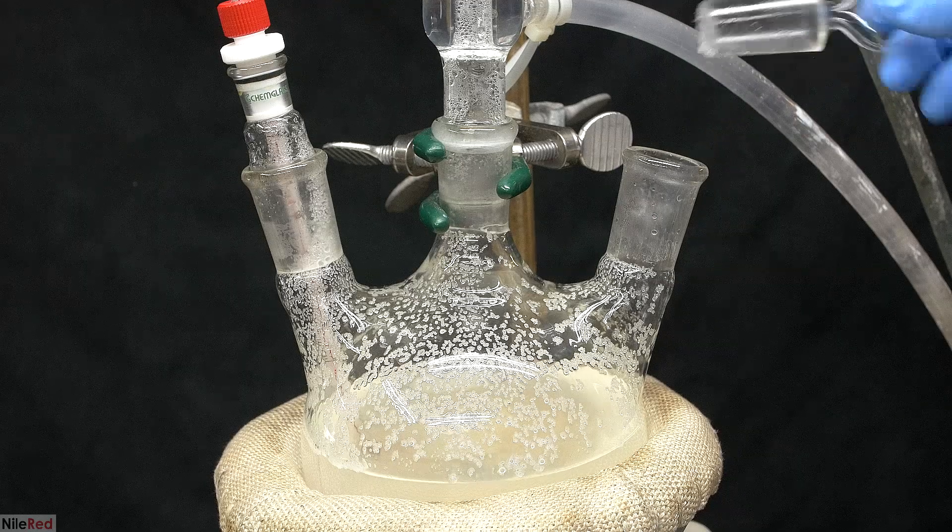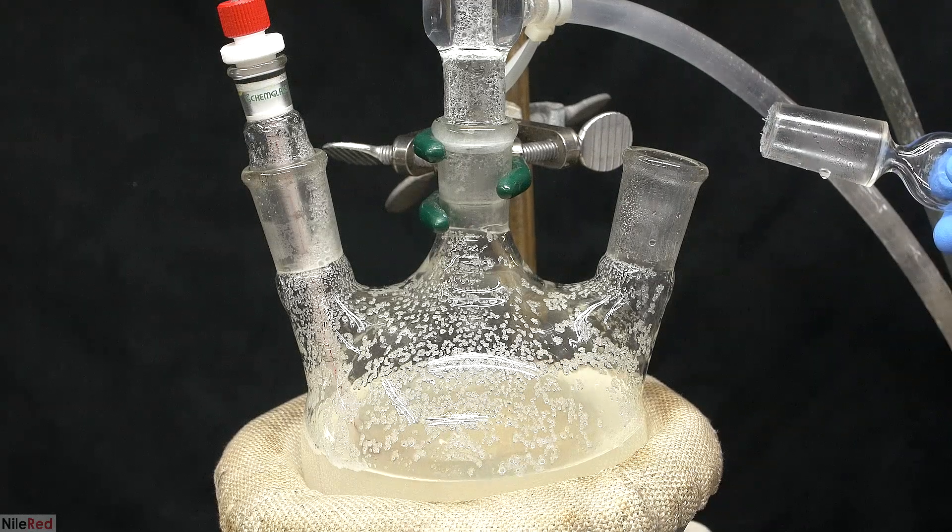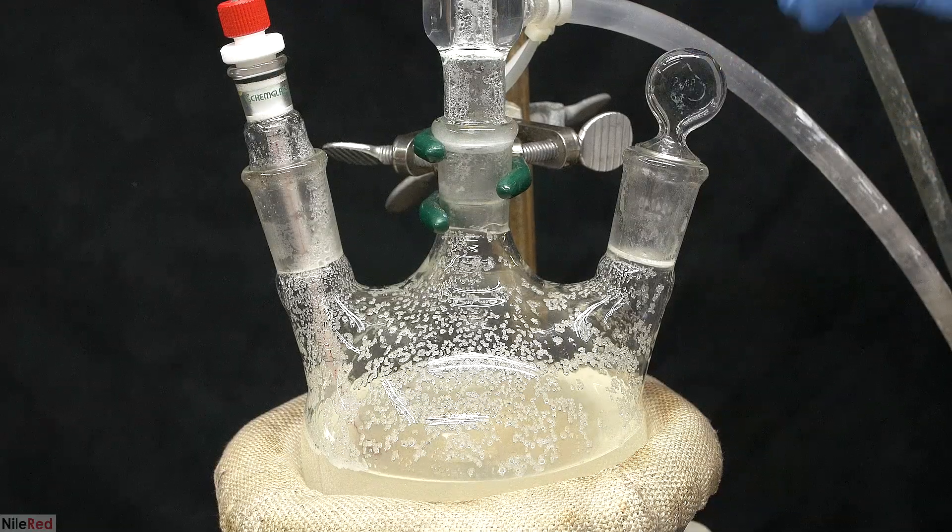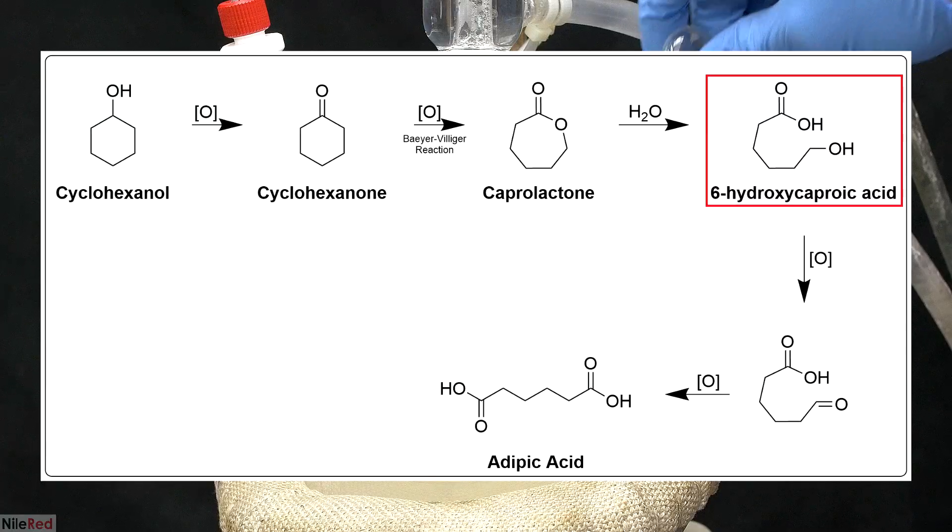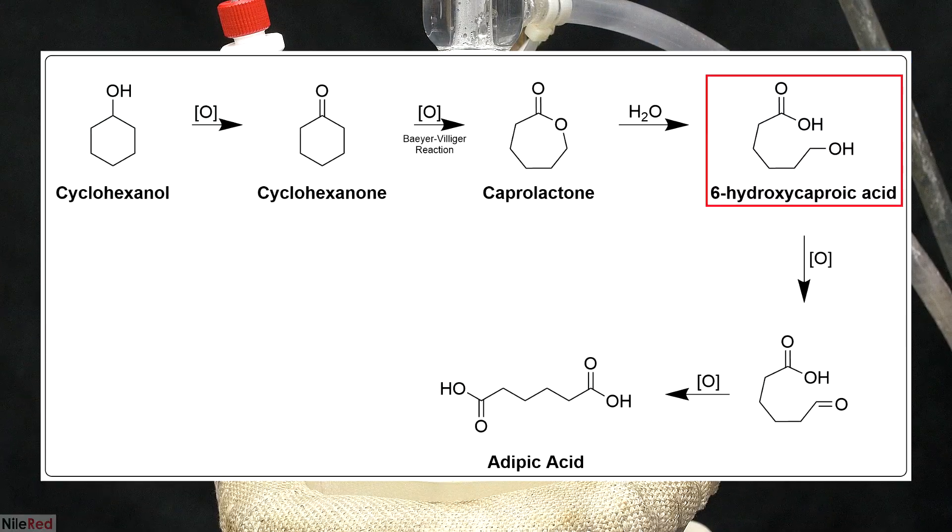I removed the stopper, and I smelled the vapors, and the stench was unmistakable. What I'm smelling here is 6-hydroxycoproic acid, which is kind of a musty, vomit-like smell. Although it's stinky, it's still a good sign, because it means we're getting close to the final adipic acid.